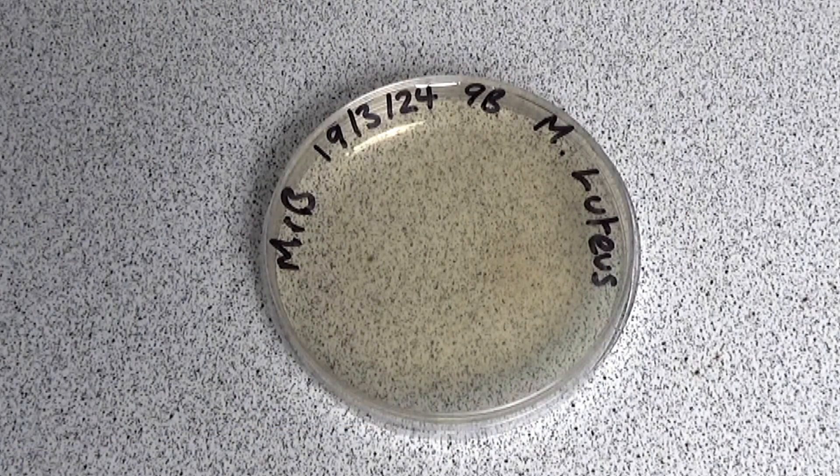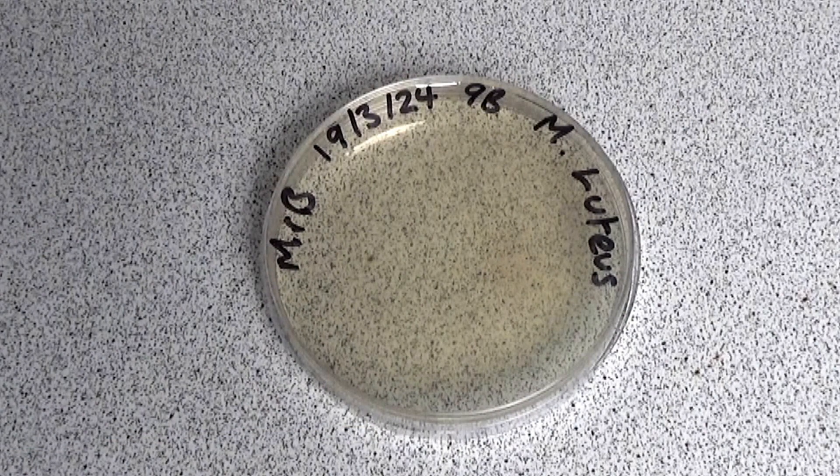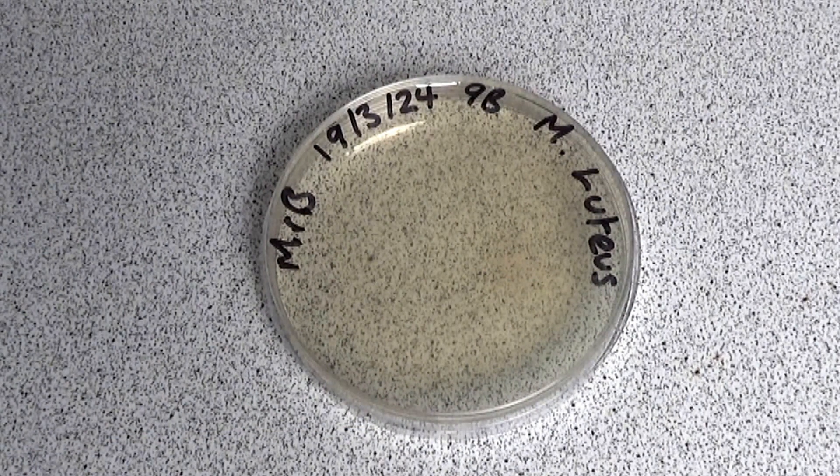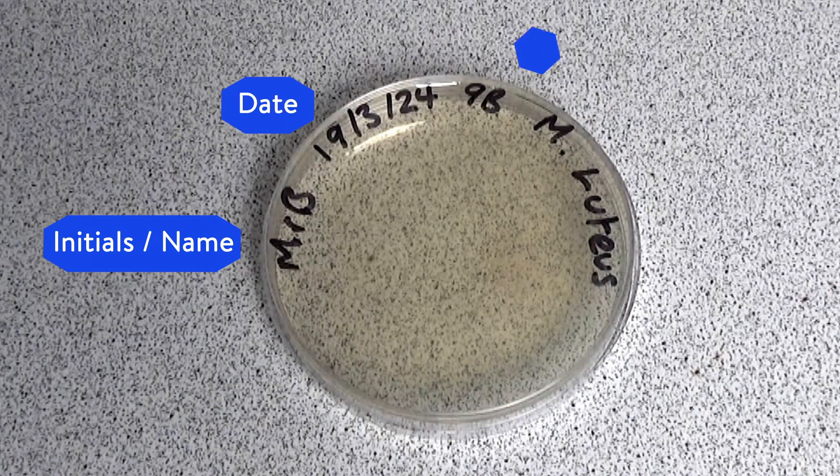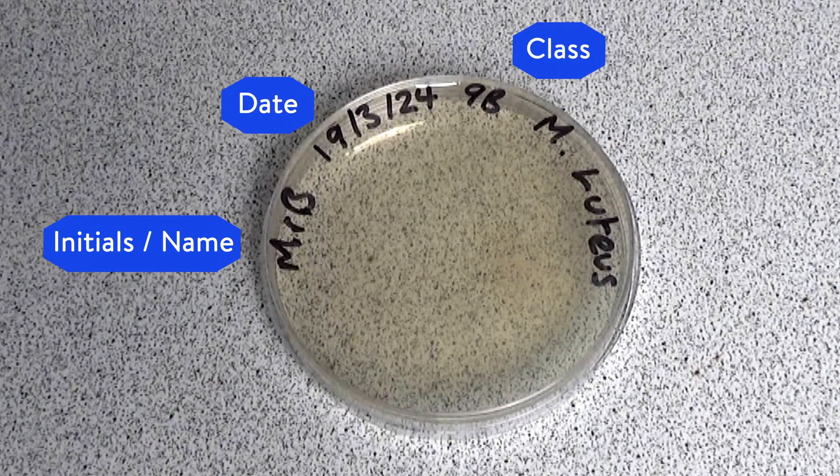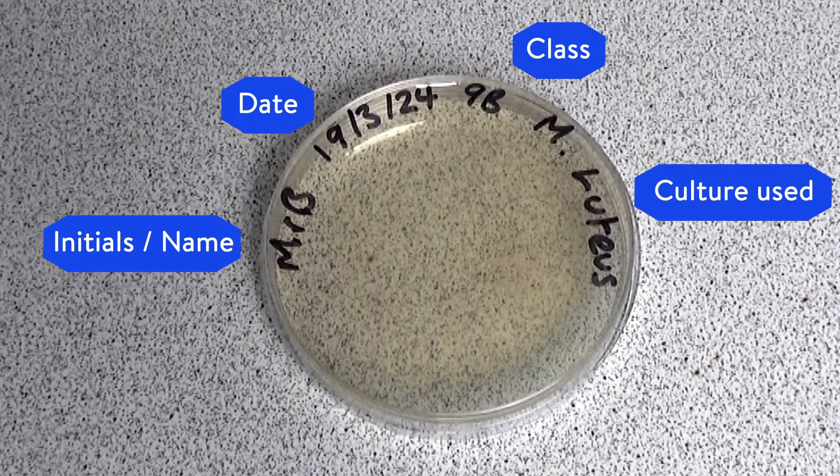Your students then label the underside of the petri dish containing the nutrient agar, making sure they write around the edge of the dish. They need to put on their initials or name, the date, their class to help the technicians when it comes to storing the dishes, and also the culture that they've used in the dish.